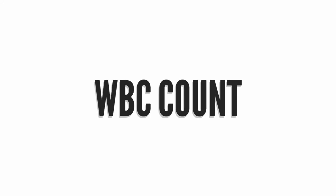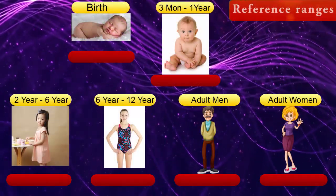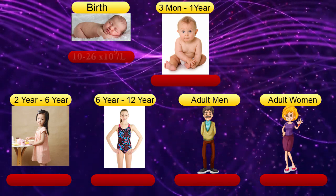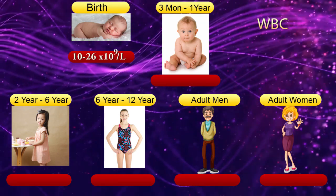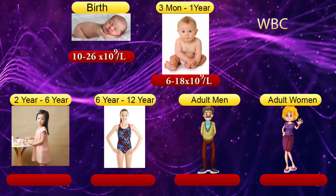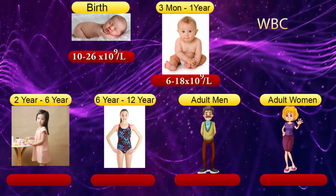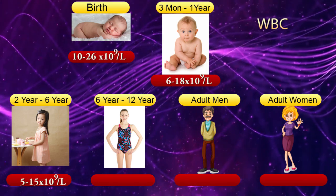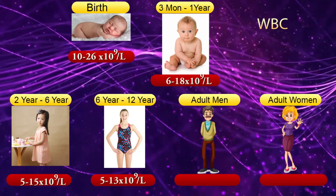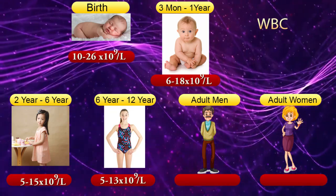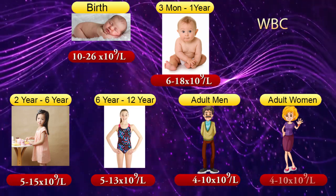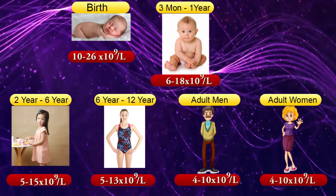Total WBC concentration reference ranges. At birth: 10–26 × 10⁹ cells per liter. From 3 months to 1 year: 6–18 × 10⁹ cells per liter. From 2 to 6 years: 5–15 × 10⁹ cells per liter. From 6 to 12 years: 5–13 × 10⁹ cells per liter. Adult men: 4–10 × 10⁹ cells per liter. Adult women: 4–10 × 10⁹ cells per liter.